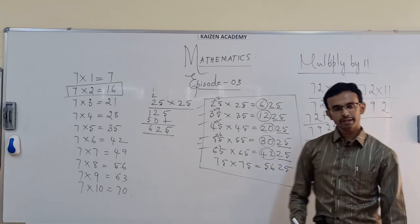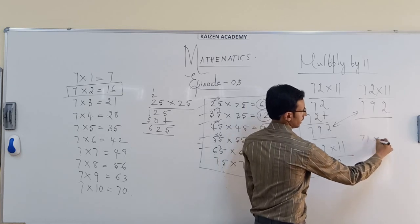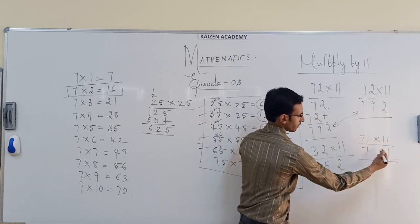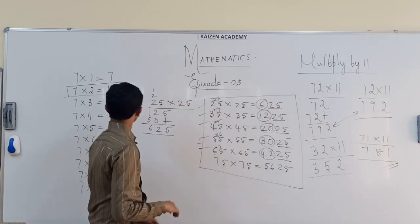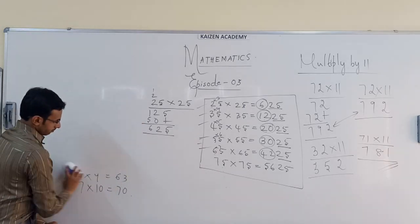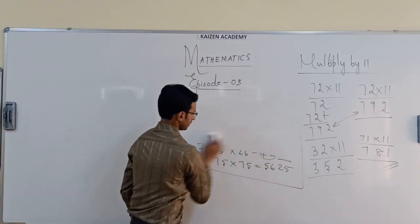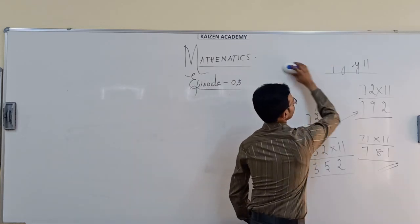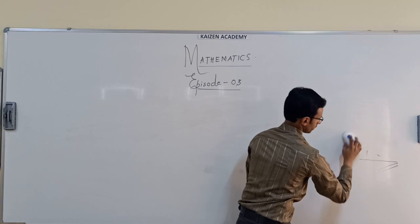One more example: 71 into 11 — write 7 and 1 as the outer digits, 7 plus 1 is 8 in the middle, giving 781. These tricks — when and how to be utilized — as we go into the chapters, whenever the need arises I will be highlighting this to you again and again so that it is not missed out.